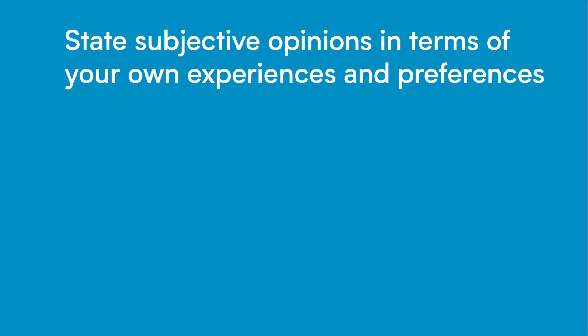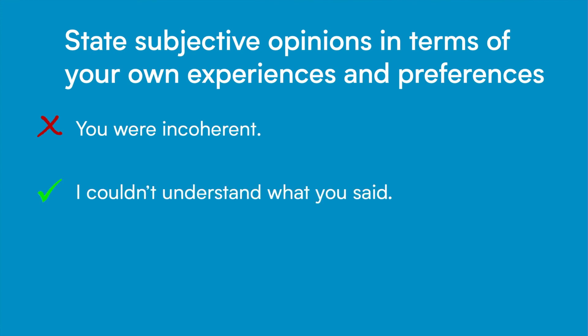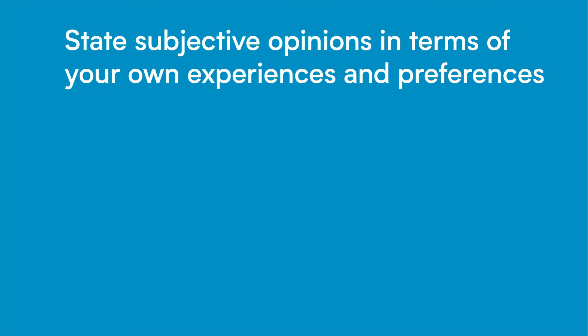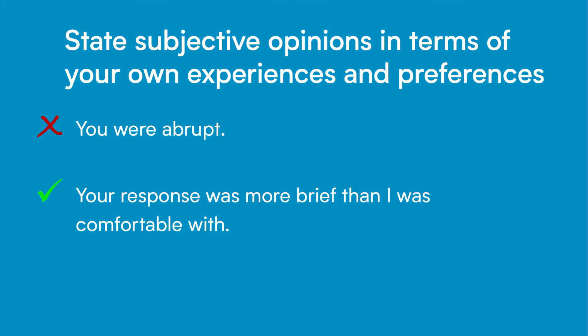As a final note, if you want to communicate a subjective opinion, clearly communicate that this is only your preference. Remember to make sure that your description of the situation is still objective. For example, don't say 'you were incoherent' — instead, you can say 'I couldn't understand what you said.' Don't say 'you were abrupt' — instead, you could say 'your response is more brief than I'm comfortable with.'